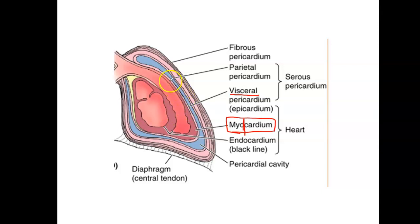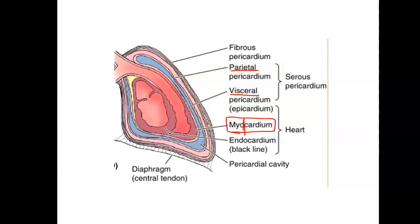That actual membrane curves around and comes back around to form a second layer. That second layer is called the parietal pericardium, surrounding the heart again. So: visceral is attached, and the outer layer is parietal pericardium. That leaves a space in the middle — that is the pericardial cavity, and it has pericardial fluid in it.